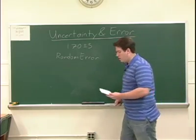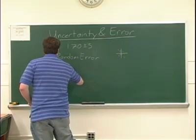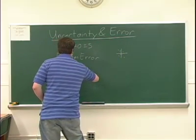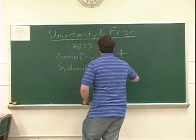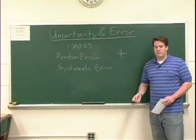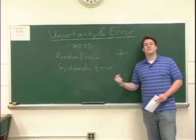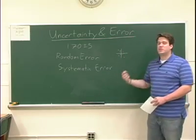The other kind of error is systematic. Systematic error, much like how it sounds, is predictable. It's always the same every time.